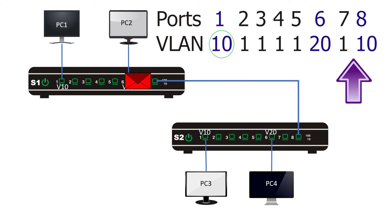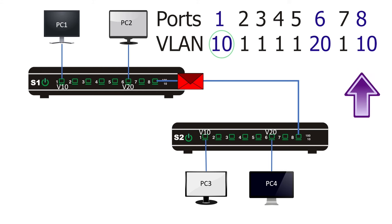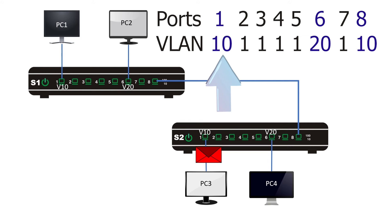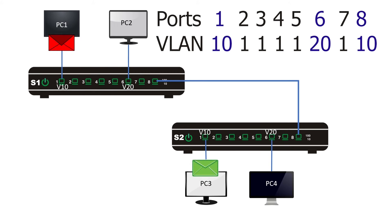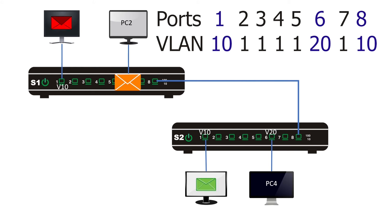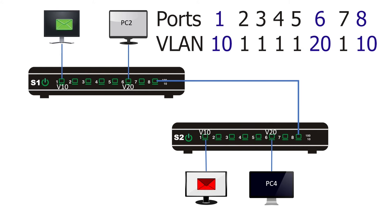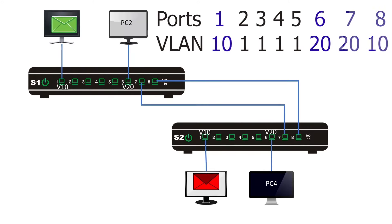However, devices in VLAN 20 cannot use this connection. When PC2 generates a broadcast frame reaching port 6 (VLAN 20), the switch can forward it only from ports with VLAN ID 20. Since no other port has VLAN ID 20, the frame is dropped. To allow VLAN 20 communication, we need a separate connection. Once a new connection is created with both end ports in VLAN 20, devices in VLAN 20 can use it to communicate.